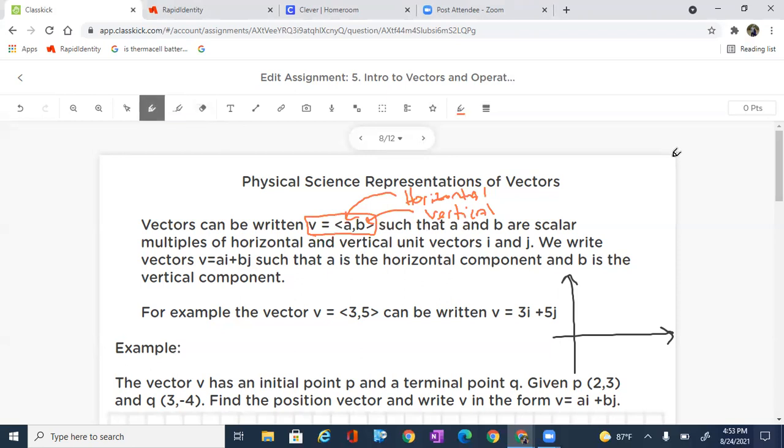So for example, if we look right here, it says the vector <3,5>, and 3 is the horizontal component, 5 is the vertical component, can be written as 3I plus 5J. That just simply means that we are breaking this down to its position vector components, which means we're just simply saying that 3 is our horizontal, 5 is our vertical.